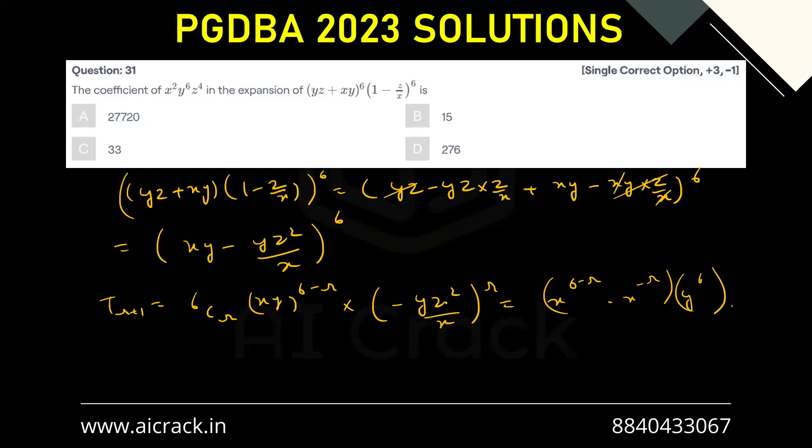And then we have z² raised to power r, that is z^(2r). Also we have a minus sign over here. That is (-1)^r.